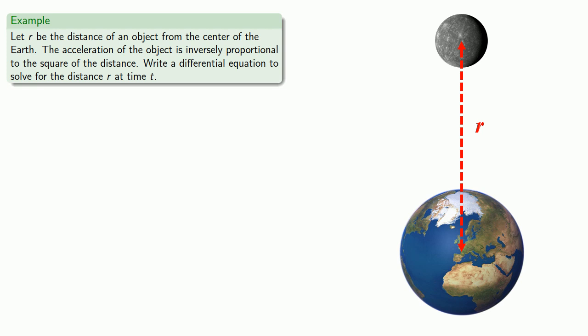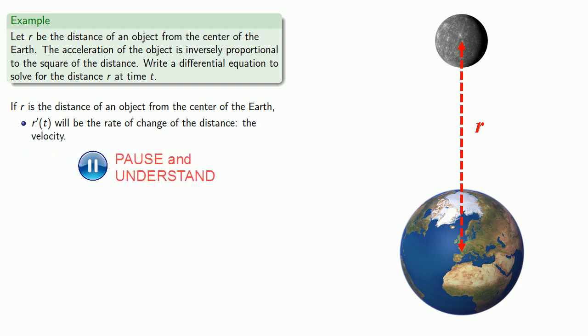So to analyze this, if r is the distance of an object from the center of the Earth, r' of t will be the rate of change of the distance. This is what we would call the velocity of the object. r'' of t will be the rate of change of velocity. That's the acceleration.